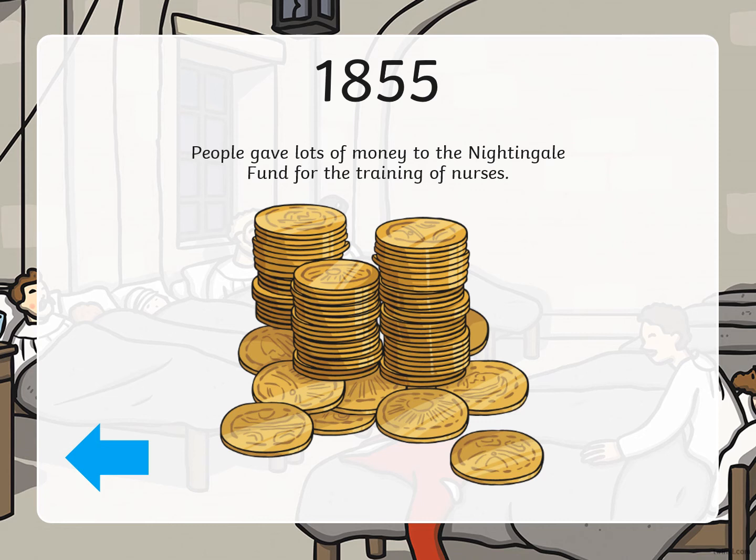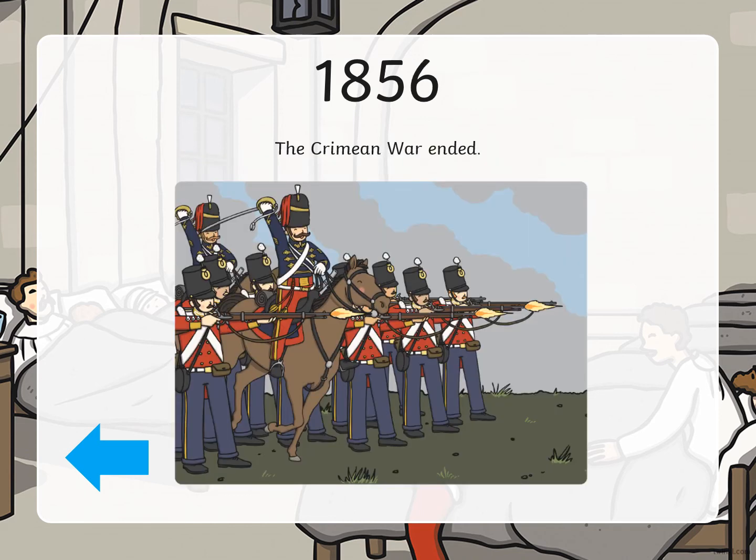In 1855, people gave lots of money to the Nightingale Fund for the training of nurses. Florence had changed how people thought about nurses — people now understood that nurses should be trained so they can help doctors to help injured people in hospital. In 1856, the Crimean War ended; there was no more fighting.